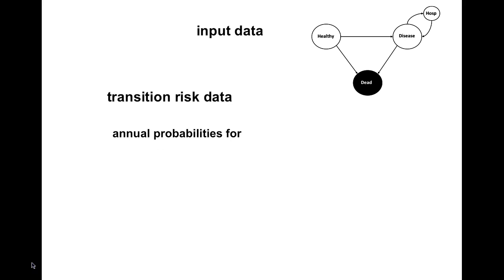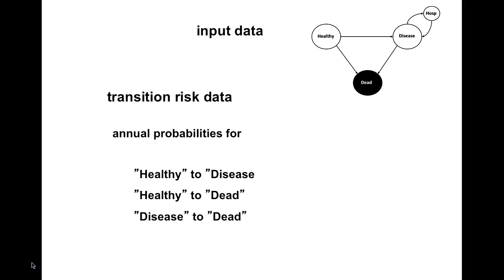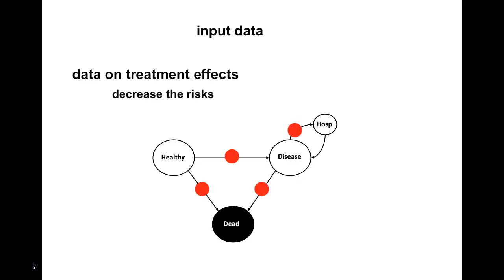The transition risk data are annual probabilities for the transition from healthy to disease — that is, the annual probability of developing the disease for individuals in the state healthy — healthy to dead, the annual probability of death for individuals in the state healthy, diseased to dead, and the annual probability of being hospitalized for individuals that have developed the disease. These annual probabilities are modeled to increase with age.